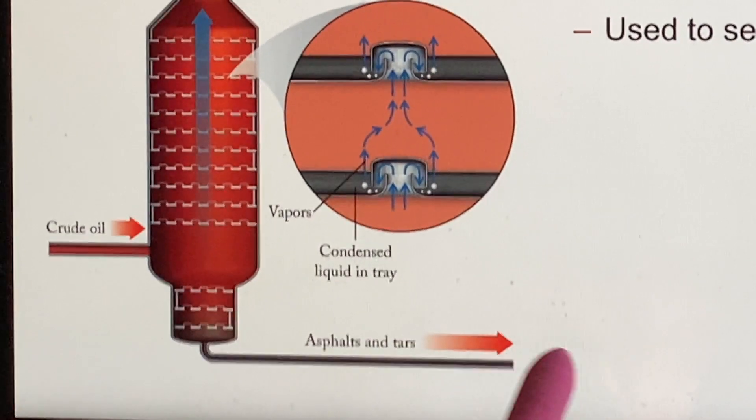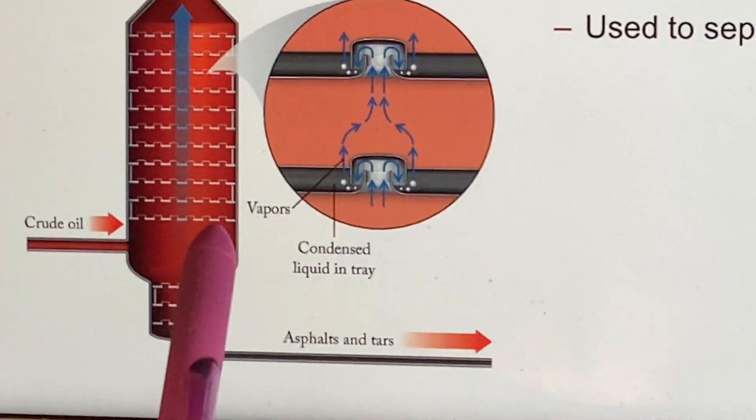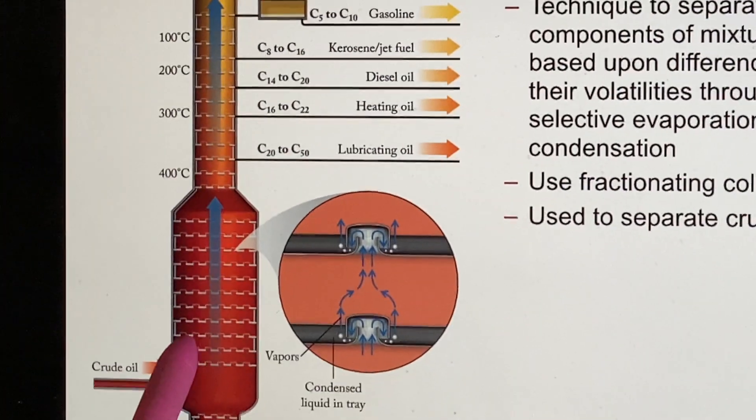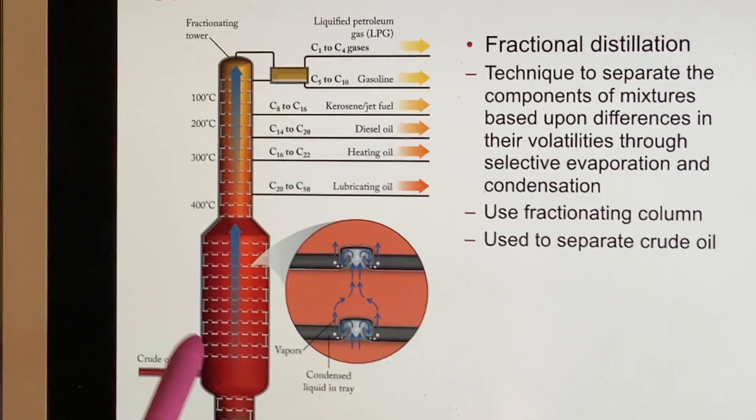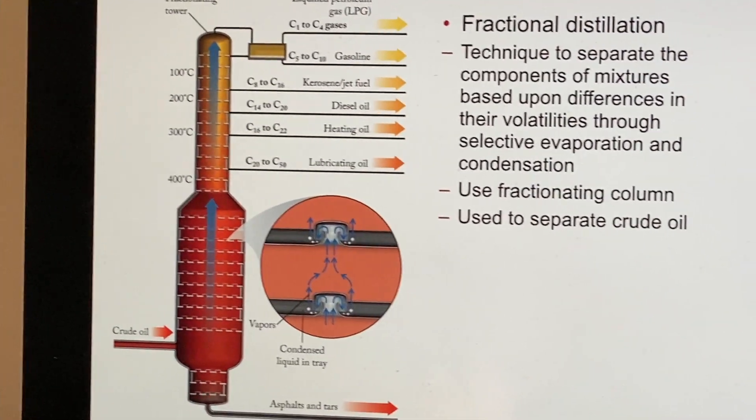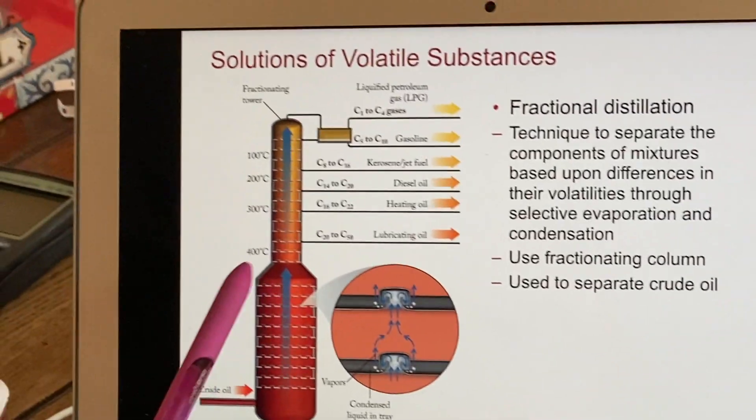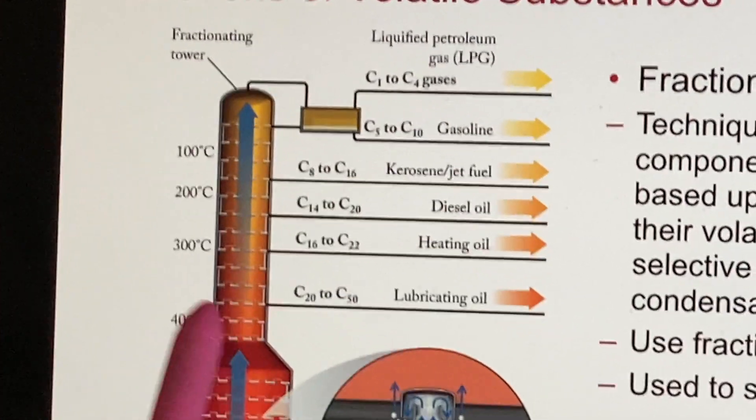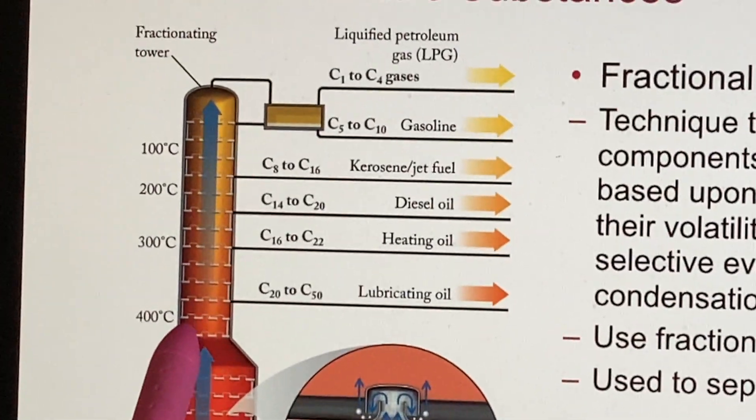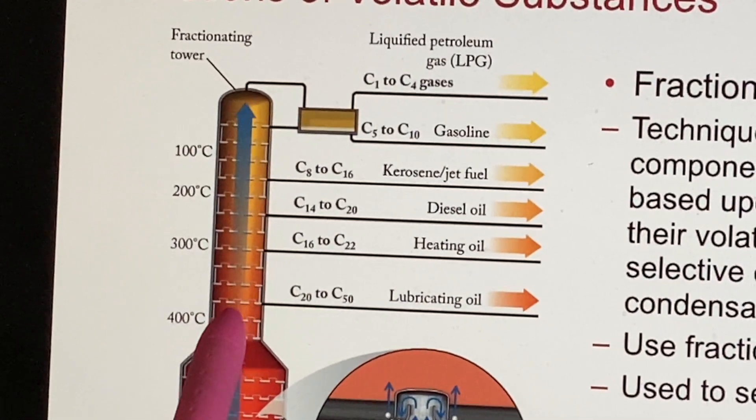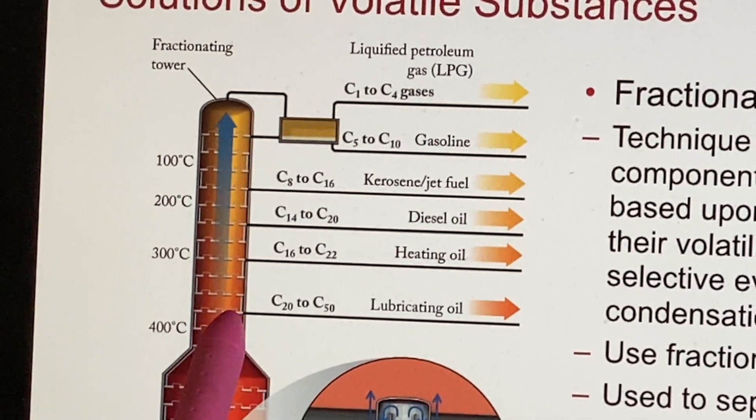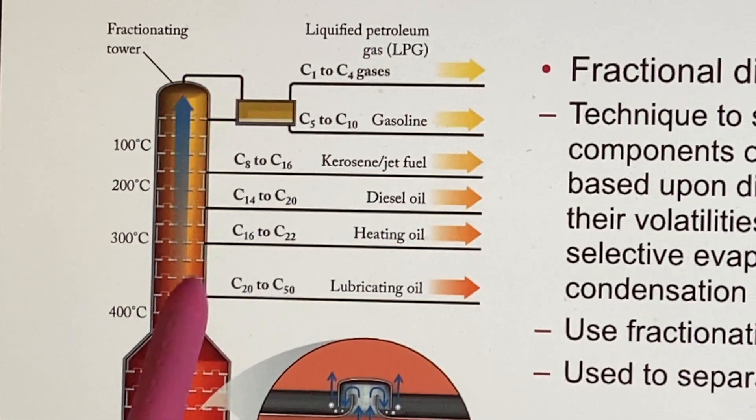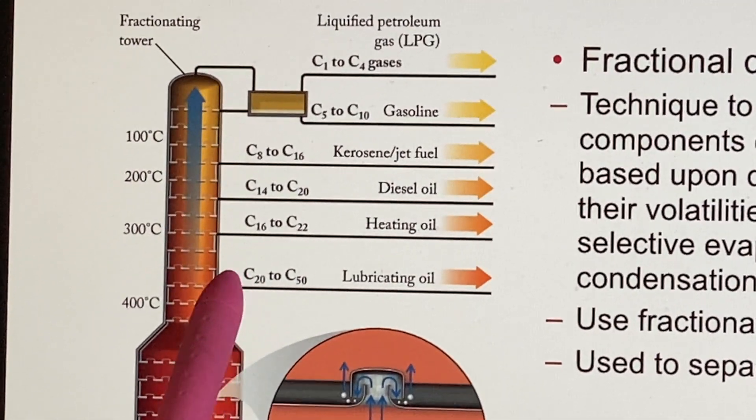They stay as a liquid and they're pulled off the bottom of the fractionating tower. So why is it a fractionating tower? Because they're getting different fractions, different portions of it. We start going up to the top of the fractionating tower. Around this area is 400 degrees Celsius and what we'll collect as a liquid at 400 degrees Celsius will be used for lubricating oil with chain links that have 20 to 50 carbons.